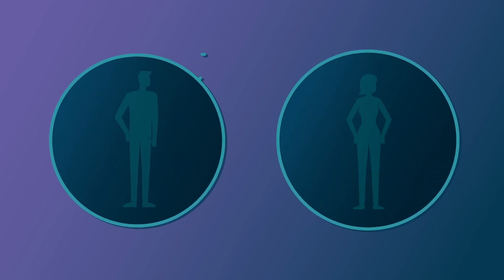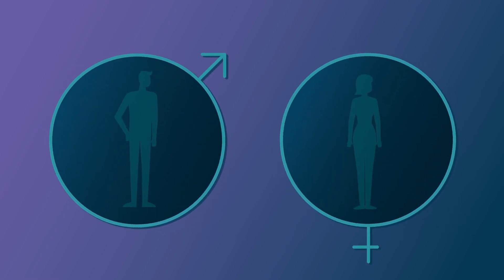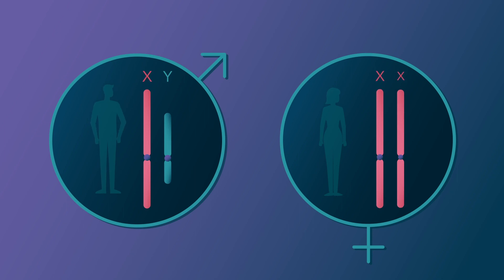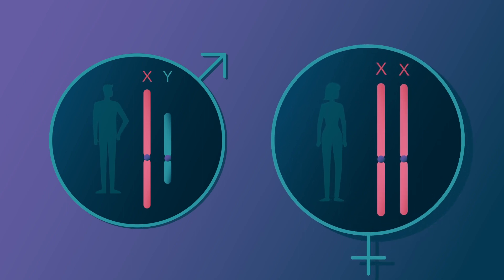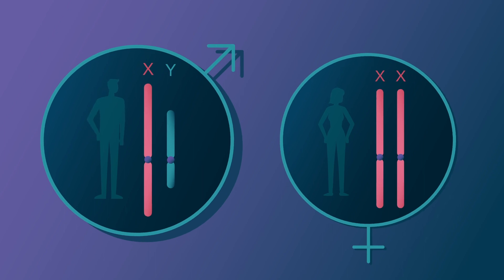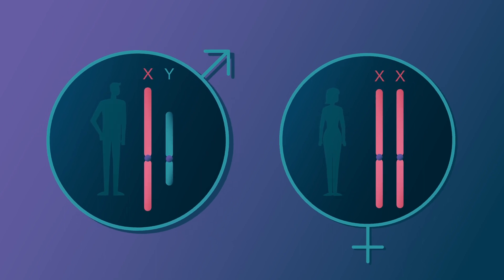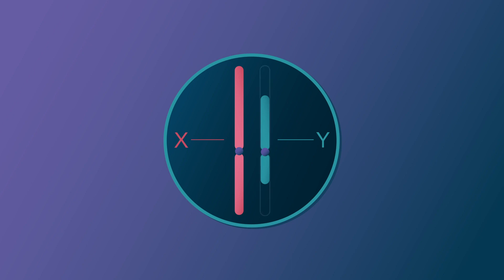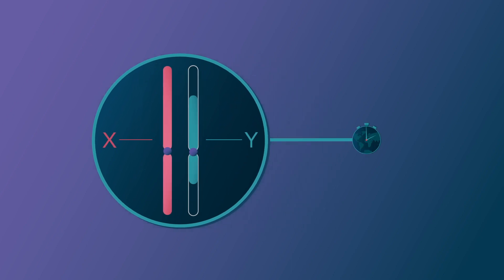In mammals, being male or female is dictated by our sex chromosomes. Females have two copies of the X chromosome, while males bear an X chromosome and a Y chromosome. The Y chromosome is very small and highly different from the X chromosome.